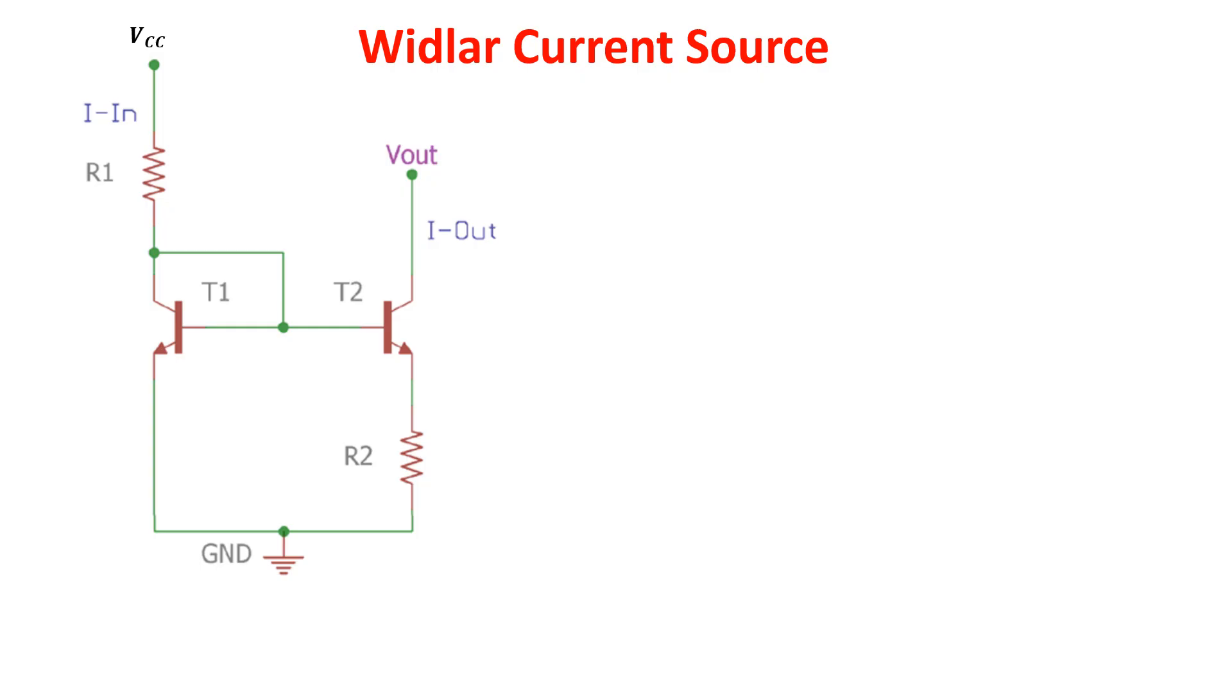Putting the circuit in a more familiar way, we have this, where we see that the base-emitter voltage of T1 is used to bias the transistor T2, which has the resistor R2 in its emitter. So the voltage VBE1 is shared between VBE2 and the resistor R2. We can say that VBE1 is larger than VBE2, and if the two transistors are built equal, so with IS1 equal IS2, we get that IC2 is smaller than IC1. So we get a smaller output current.